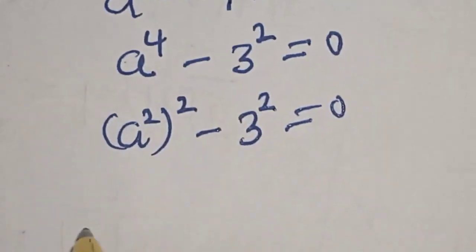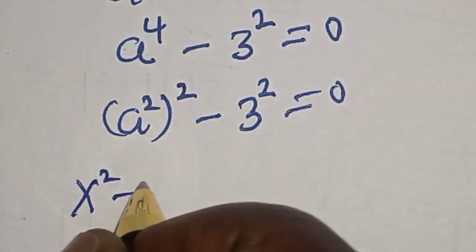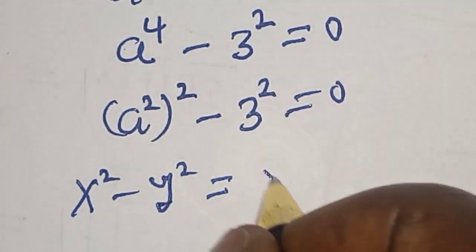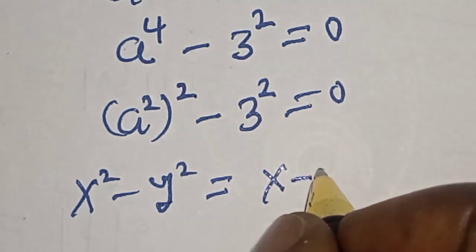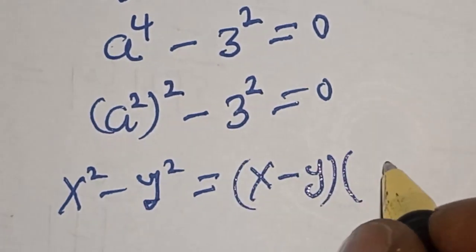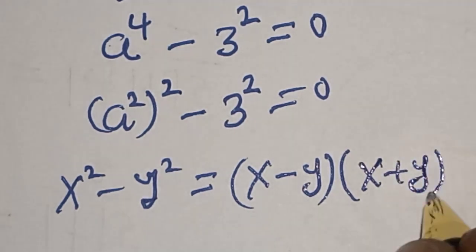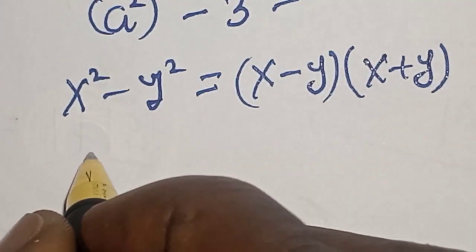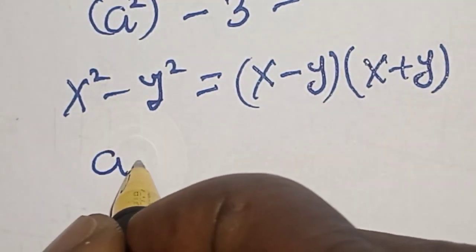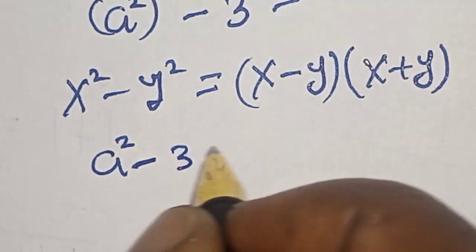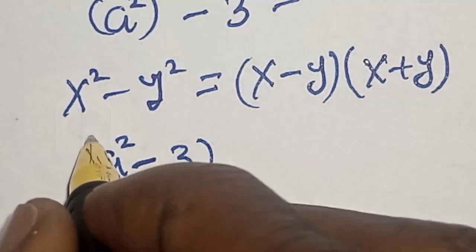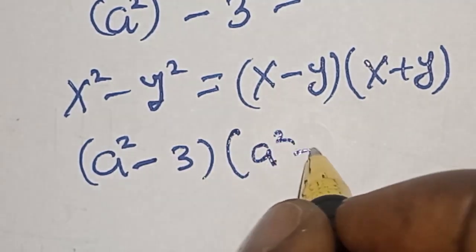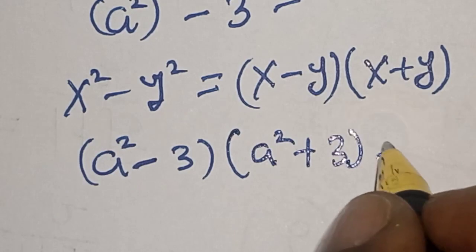This is the difference of two squares. That is, s squared minus y squared is equal to s minus y, multiplied by s plus y. So: a squared minus 3, multiplied by a squared plus 3, is equal to 0.